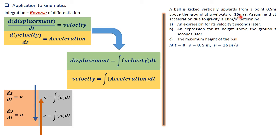When t equals zero, velocity was already 16 meters per second. We are told acceleration due to gravity is 10 meters per second squared, so in our case acceleration is negative 10, because the ball is decelerating — going against gravity, being overcome by gravity — such that the velocity is reducing by 10 meters per second every single second.